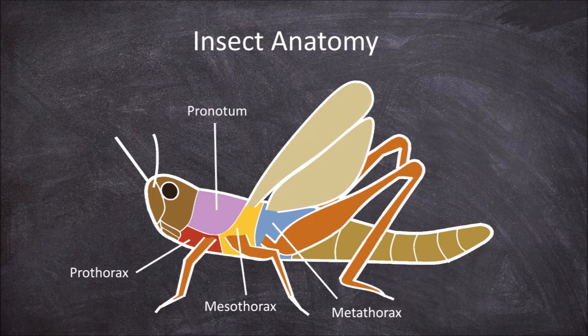In winged insects, the wings are attached to the thorax — one pair on the mesothorax, the second on the metathorax. No wings are found attached to the prothorax.